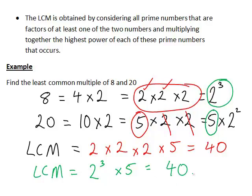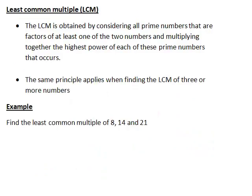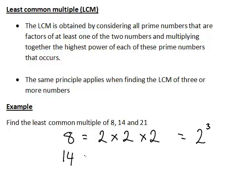So those are two methods for finding the least common multiple. The same principle applies if we have more than two numbers. So let's look at finding the least common multiple of eight, fourteen, and twenty-one. Again, we write those out in terms of their factors. Eight is two times two times two, or two to the power of three. Fourteen is seven times two. And twenty-one is seven times three.